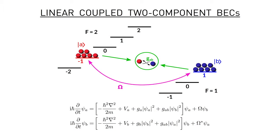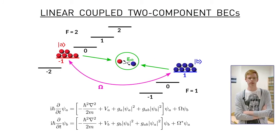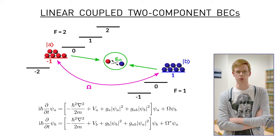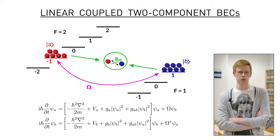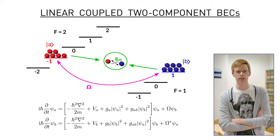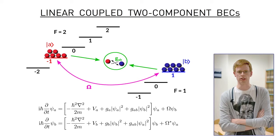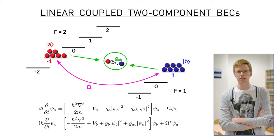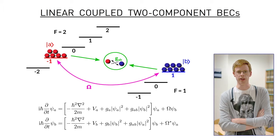Our goal is to study the dynamics of a spinor Bose-Einstein condensate. Specifically, we consider a two-component atomic Bose gas, in which the two components are two different hyperfine levels of some atomic species, dressed by an external radiofrequency field, also known as Rabi coupling.